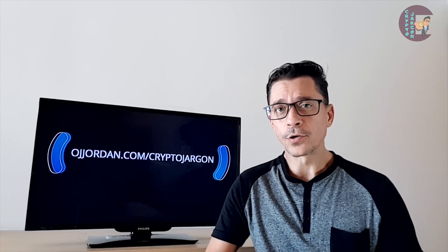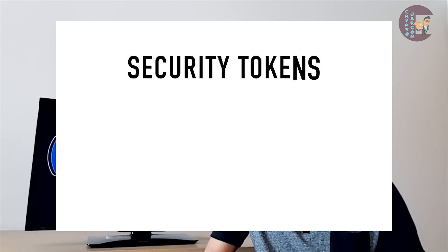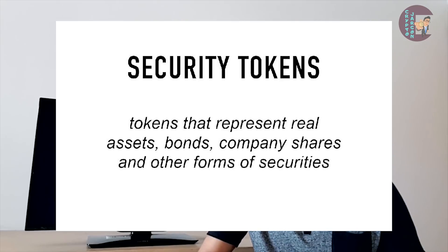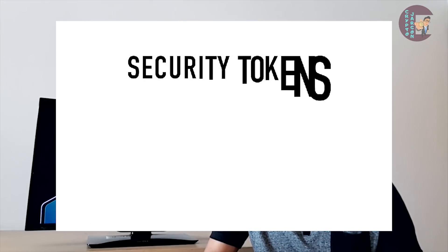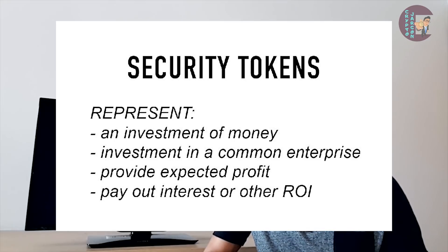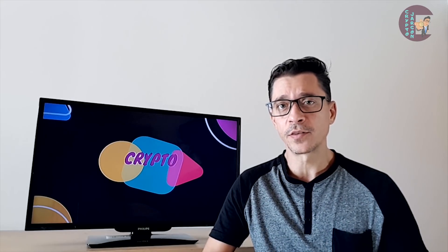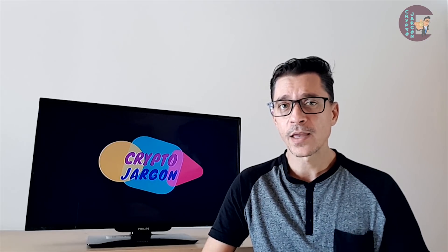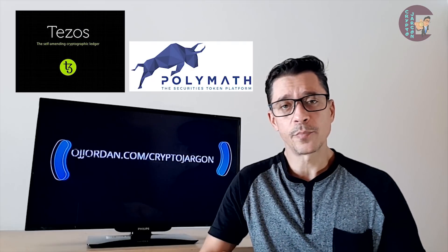A security token is a token on the blockchain that represents a real asset. An example would be shares in a company issued on the blockchain. A token is considered a security if it fulfills the following criteria: it is an investment of money, the investment is in a common enterprise, and there is an expectation of profit from the work of promoters or a third party. Because these tokens are deemed as securities, they are subject to government regulations. Examples of security tokens include Tezos and Polymath.